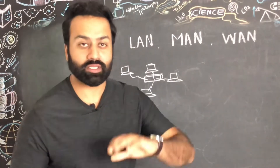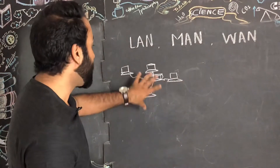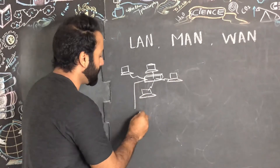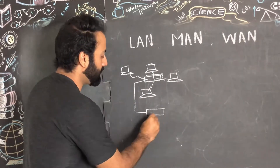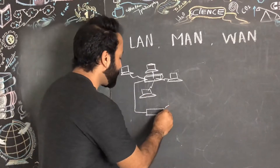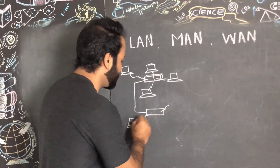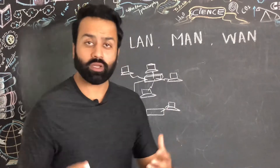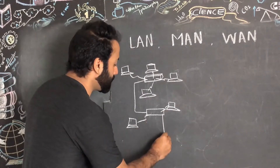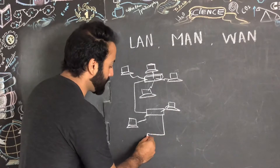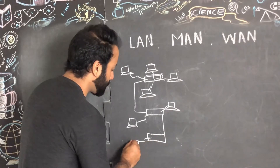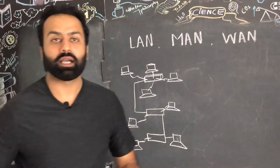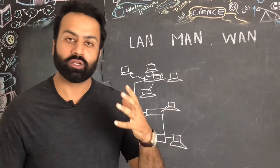This is called a Local Area Network — I'm not talking about topology, this is all about LAN. Now if this switch is connected to another switch in another room on the same building, and that switch is also connected to computers, it's still called a Local Area Network. Similarly, if it's connected to another floor in the same building with another switch, and those devices are also connected with one another — it is still called a Local Area Network.